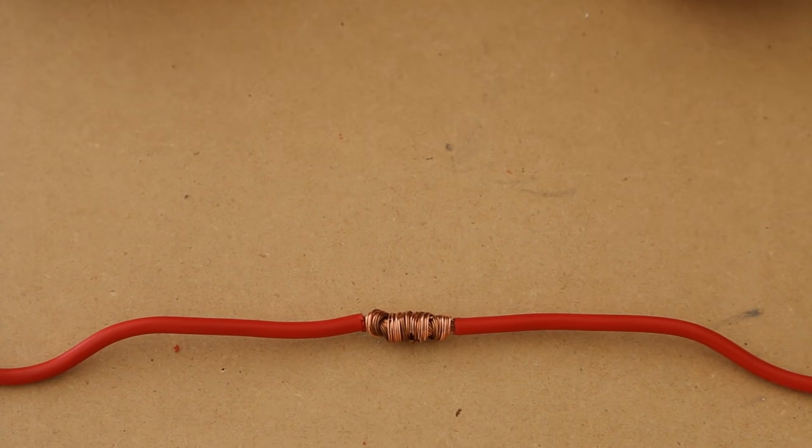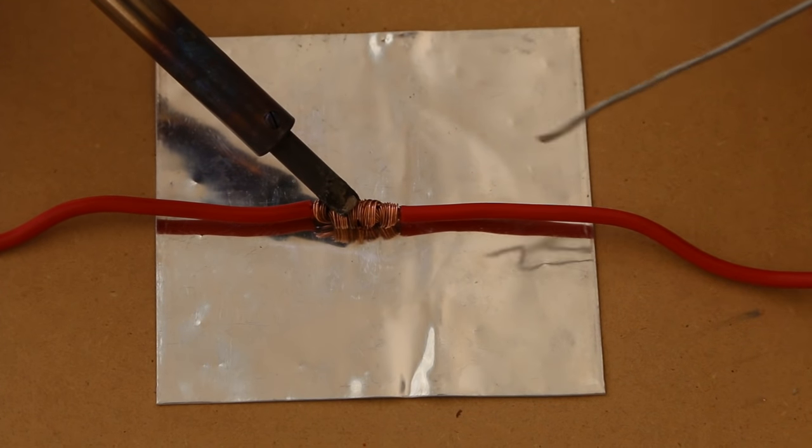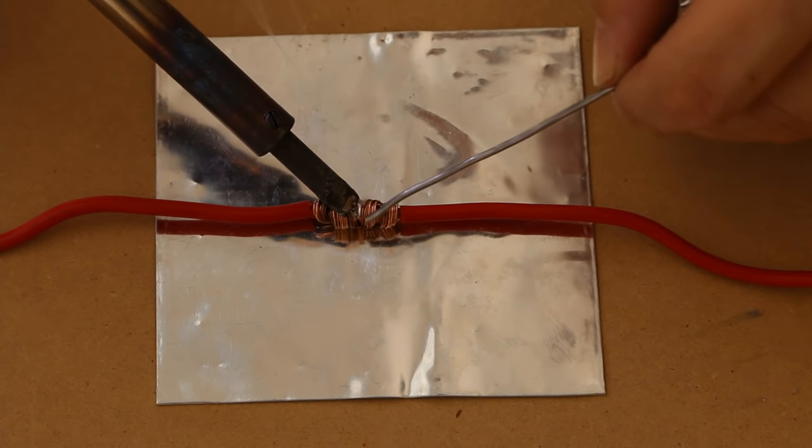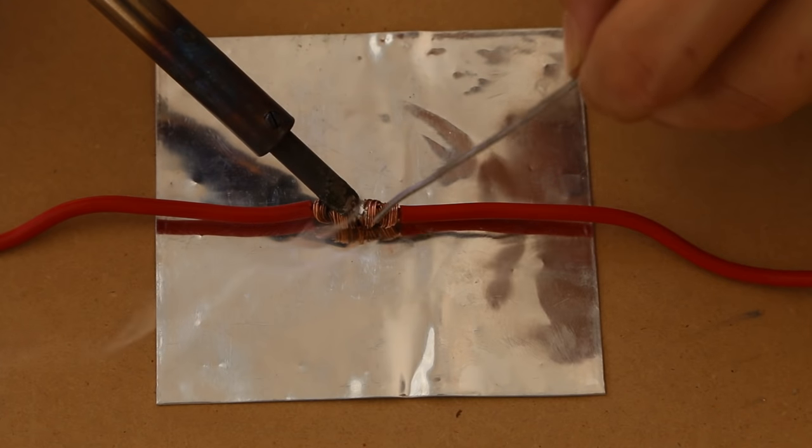I also want to point out that this is thick 12 gauge wire, and this technique actually works a lot better with thinner gauge wire. So keep that in mind. So I'm going to touch the joint, get it hot, touch my solder to it and hopefully it'll start melting into the unit.